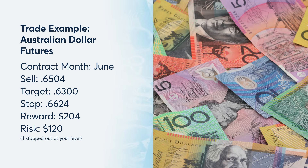Now if a trader believes that the Australian dollar could drop from here, they could express that by selling the June micro Australian dollar futures contract at 0.6504, and target a move to the October lows of 0.6300.